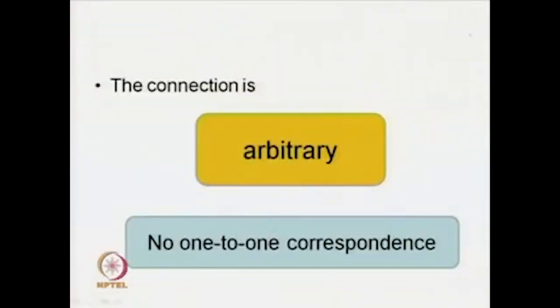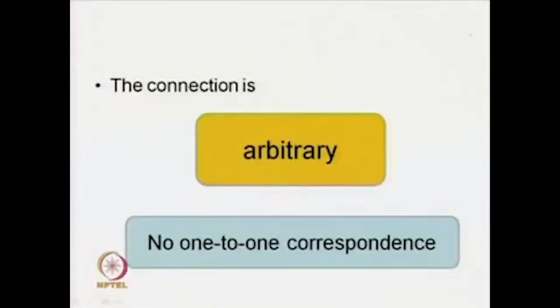Signifier and signified, signified and signifying system or signification — I would like to draw your attention to a very important formulation within structuralism, and this is the concept of arbitrariness. We know we have a signifier and we have a signified. Saussure says that the relationship between the signifier and the signified is one of arbitrariness — that is, it is an arbitrary relation in the sense that there is no one-to-one correspondence between a sound image and the concept.